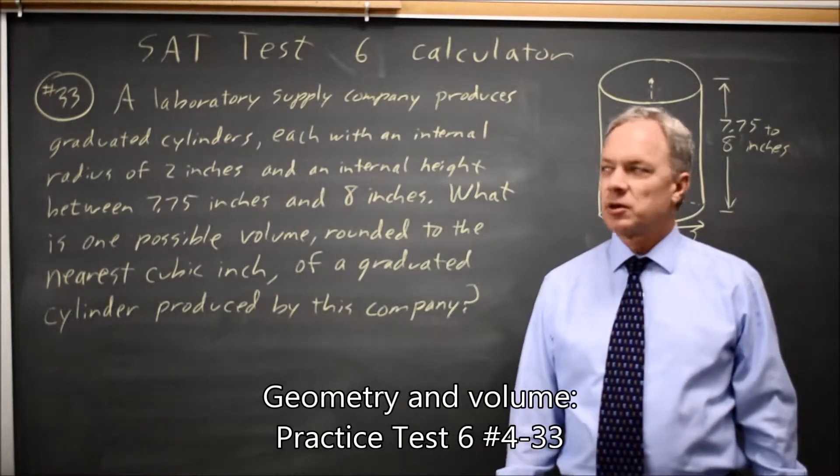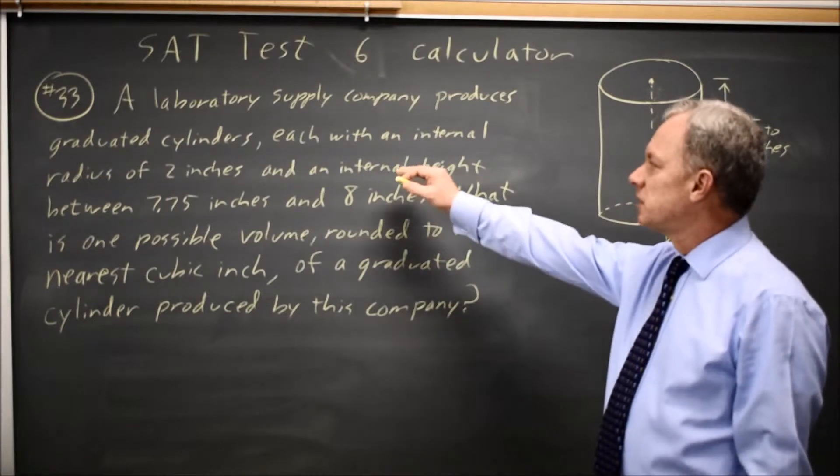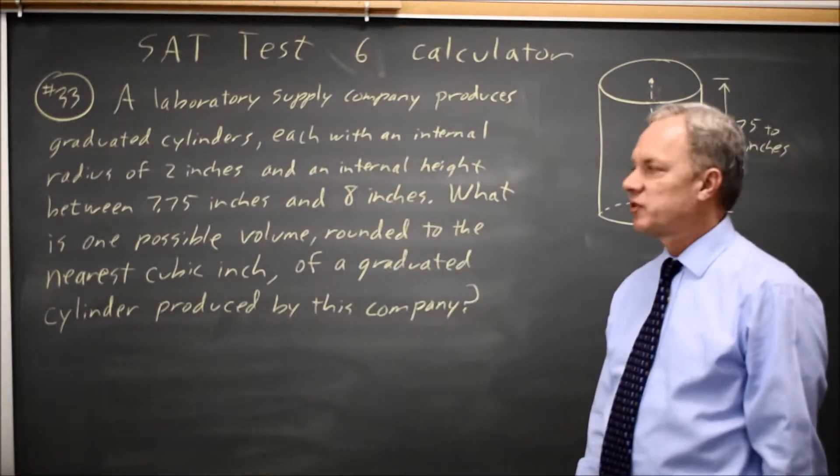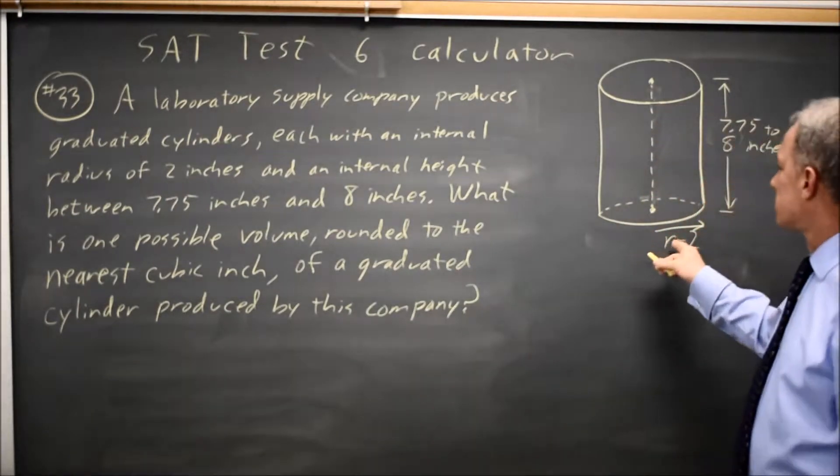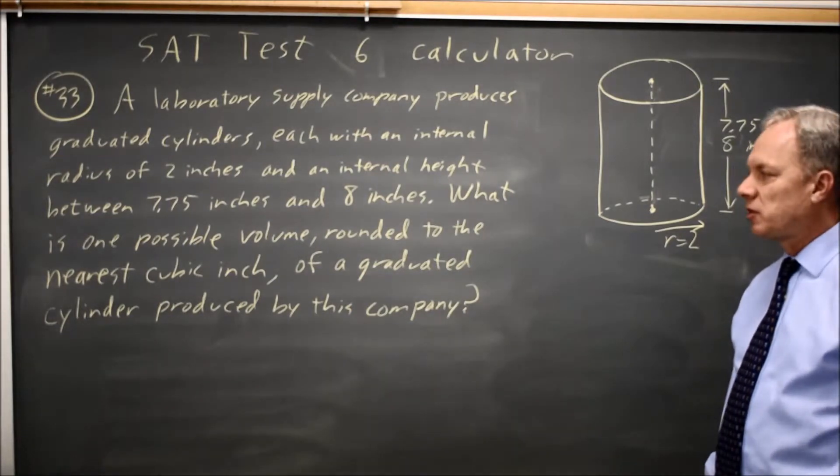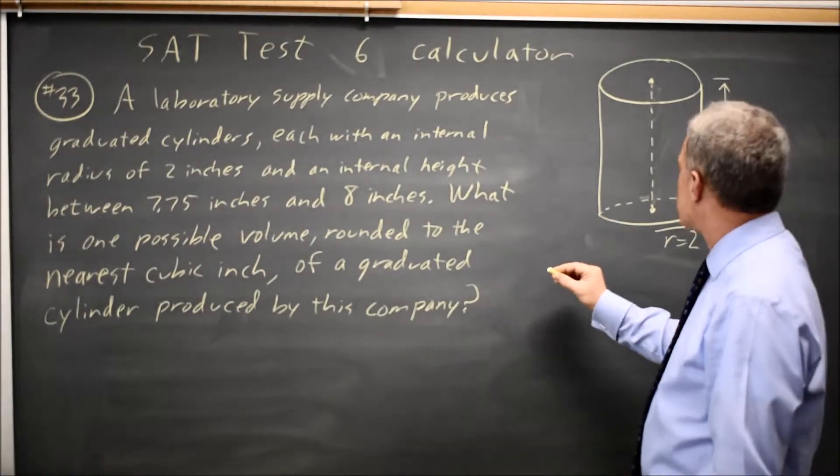This is SAT test 6, calculator question number 33. A laboratory supply company produces graduated cylinders, internal radius 2 inches, height 7.75 to 8 inches. I've added these numbers to this diagram, where I also added the diagram. What is one possible volume, rounded to the nearest cubic inch, of a graduated cylinder produced by this company?